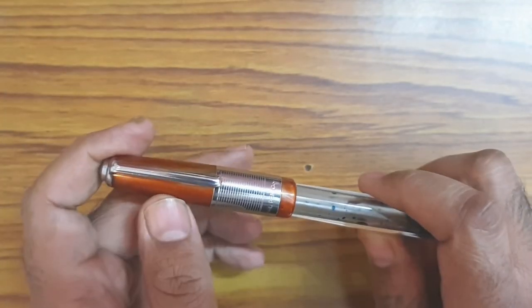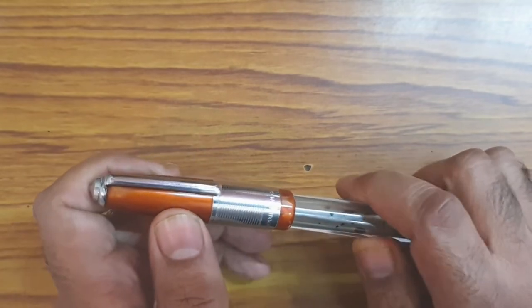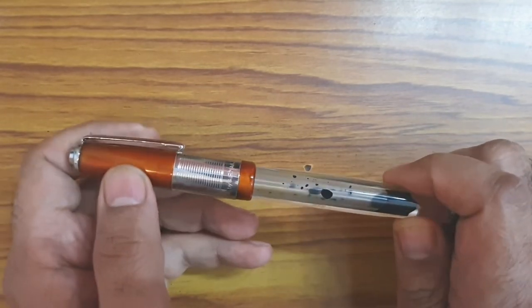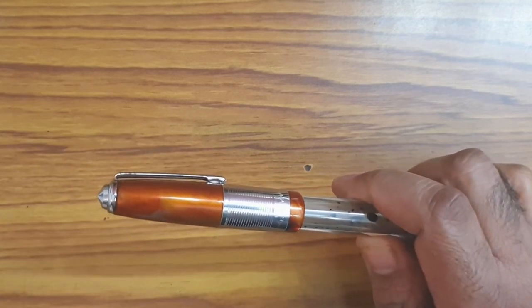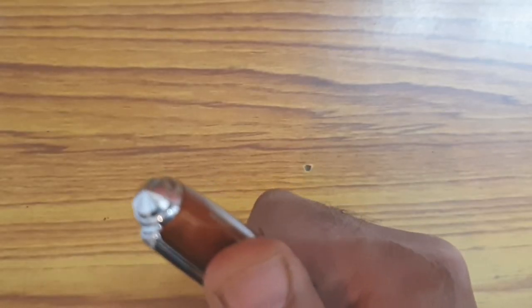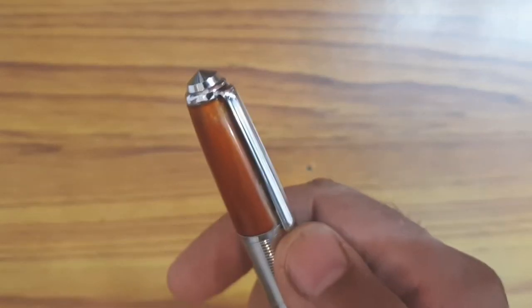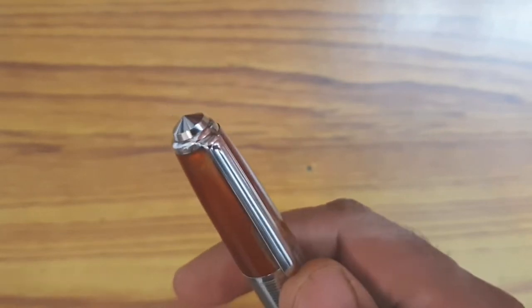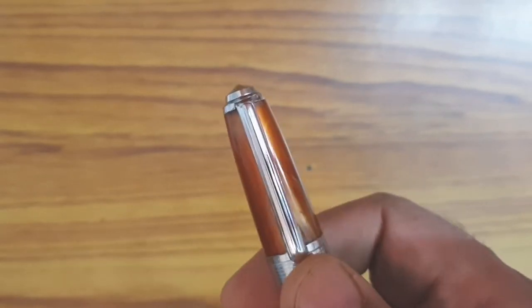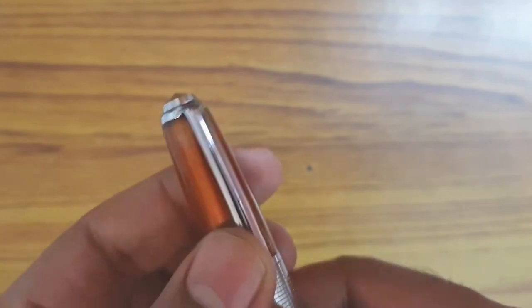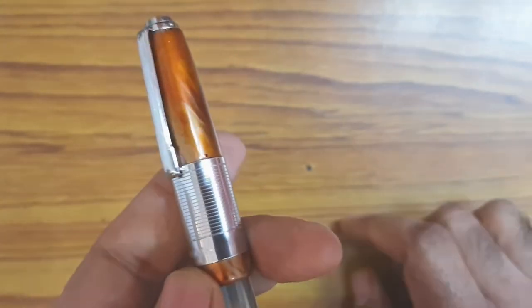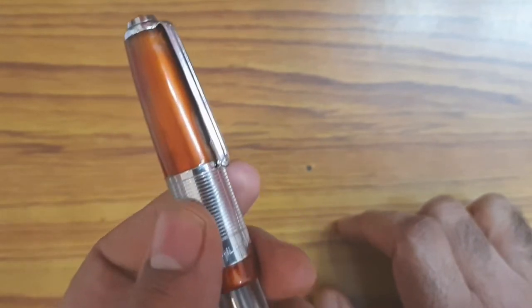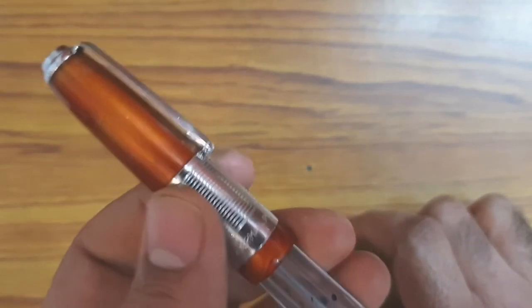This may not look very elegant to many and sometimes gives the feel that even the barrel is light weighted, but that is not the case. The finial has a conical shape and the clip is attached to it. The clip has a ribbed pattern and is very stiff.